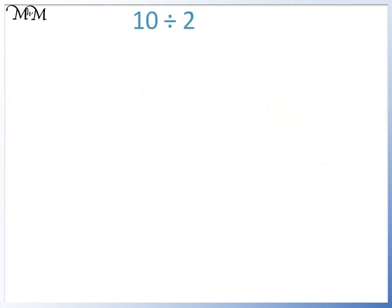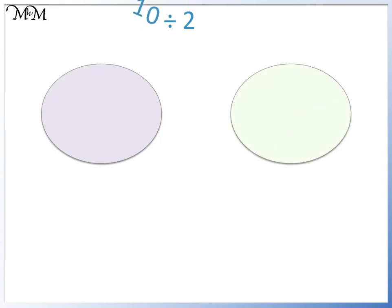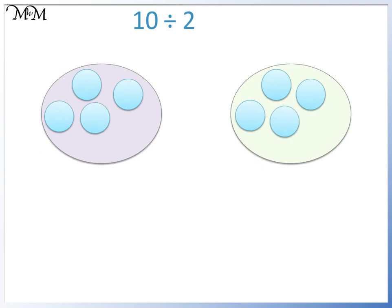Here's another example: ten divided by two. We are dividing by two, so we draw two circles. We are dividing ten by two, so we begin drawing counters in each circle, making sure that we take it in turns to draw in each circle. We stop drawing when we count to ten: one, two, three, four, five, six, seven, eight, nine, ten. We have five counters in each circle, so ten divided by two equals five.